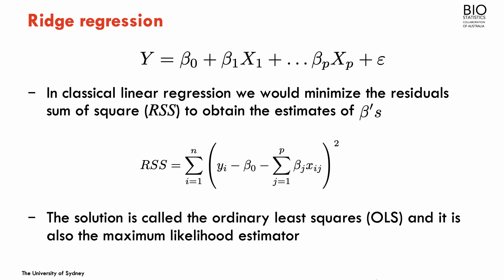Let's consider the usual linear regression problem, where I have P predictors to predict the outcome Y. In classical linear regression, the way of obtaining estimates for these predictors is to minimize the residual sum of squares. The solution of that minimization problem gives the estimates for the betas, and that solution is called ordinary least squares.